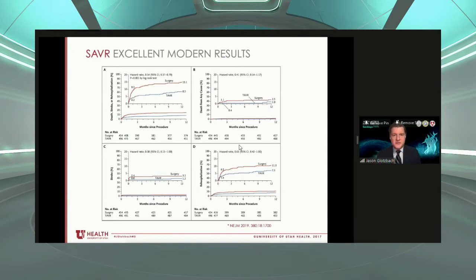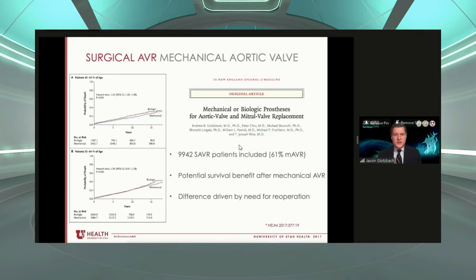TAVR is really becoming the standard of care for patients with aortic stenosis, and the question becomes: can we apply the same parameters or the same clinical decision-making to bicuspid patients? The outcomes are good, and the question is whether TAVR outcomes will be better with bicuspids. One other thing to mention is mechanical valves — they must be placed with open surgery. As bicuspid patients are often younger, mechanical valves offer a durability advantage, which is appealing.